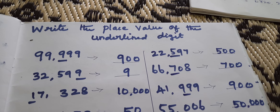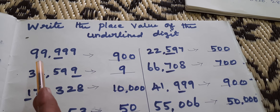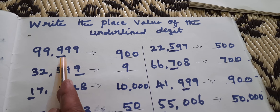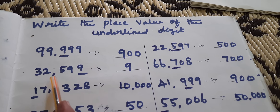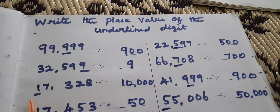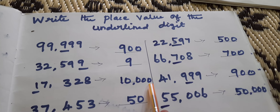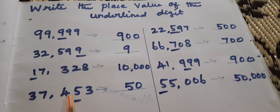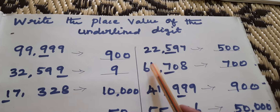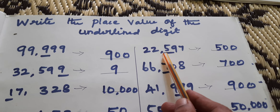Write the place value. Write the place value of the underlined digit. 9999 — 9 is in the hundreds place, so 900. 32599 — 9 is in the ones place, so 9. 17328 — 1 is in the ten-thousands place, so 10000. 37453 — 5 is in the tens place, so 50. 22597 — 5 is in the hundreds place, so 500.